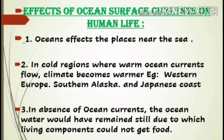In cold regions where warm ocean currents flow, the climate becomes warmer — examples include western Europe, southern Alaska, and the Japanese coast. Because of warm ocean currents, these places become warmer and precipitation increases, which is why they do not freeze in winter. In the absence of ocean currents, the ocean water would remain still, and living organisms could not get food. Without plants, animals and fish would also not survive.